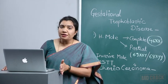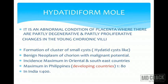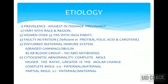The incidence is maximum in oriental and southeast Asian countries — maximum in the Philippines, which is among developing countries. If an MCQ asks whether it is common in developed or developing countries, the answer is developing. It is one in 80 pregnancies in the Philippines and one in 400 pregnancies in India. Incidence is highest in teenage pregnancy.